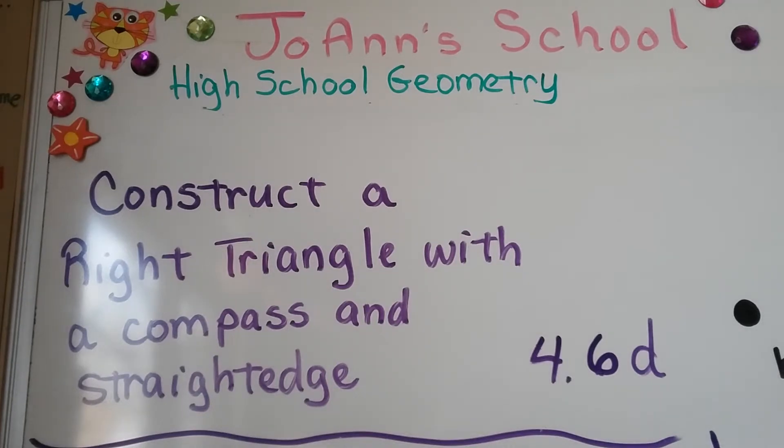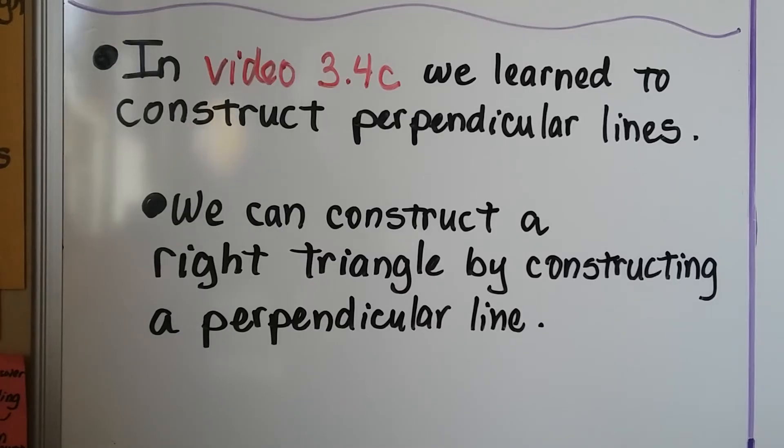Construct a right triangle with a compass and straightedge. This is lesson 4.6D. In video 3.4C, we learned to construct perpendicular lines, and we can construct a right triangle by constructing a perpendicular line.